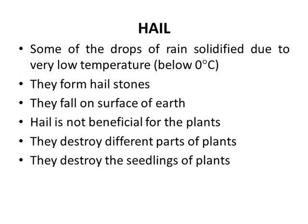Hail: some drops of rain solidify due to very low temperature below zero degrees centigrade — they form hailstones. They fall on the surface of the earth. They are not beneficial for plants; they destroy different parts of the plant and destroy seedlings of plants.